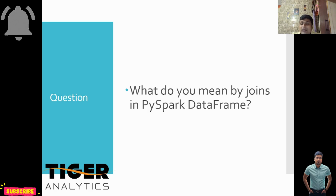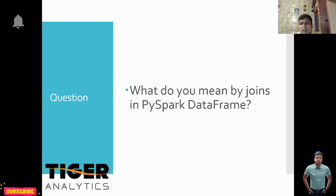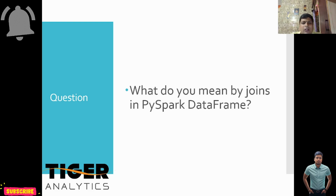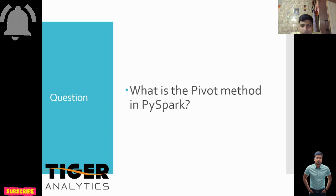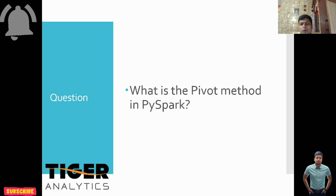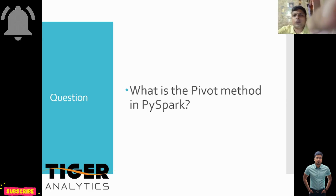Another question: what do you mean by joins in PySpark DataFrames? In traditional SQL there are five types of joins: left join, right join, inner join, full join, and cross join. In Spark there are a few more joins, so you need more clarity on those. Also: what is the pivot method in PySpark? If a problem is given, how do you apply the pivot method? You need to be prepared for this.